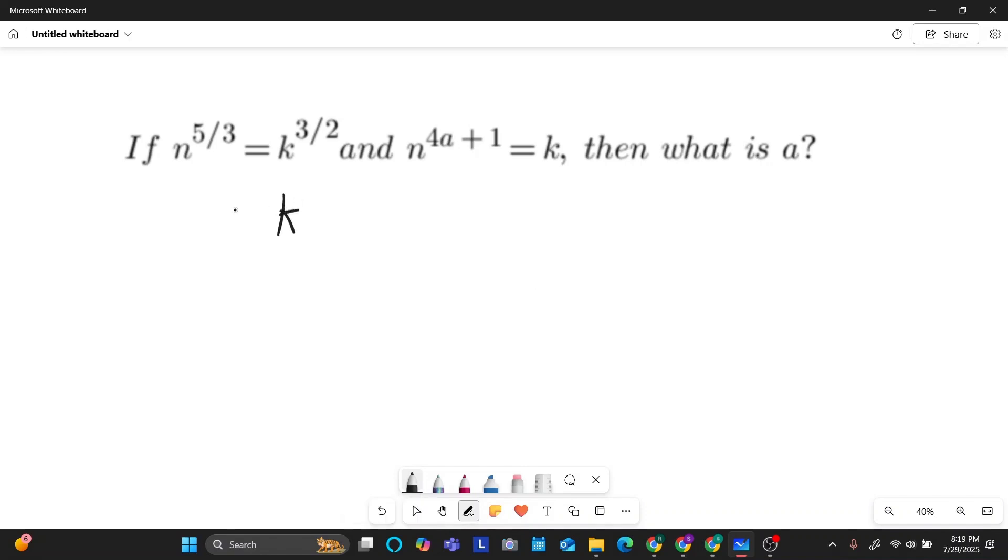So if I was to isolate for k right here, I'd get k equals n to the power of something. And so then I could take this n to the power of something, plug it into k right here, and then set that equal to n to the power of 4a plus one. And then at that point, since you'd be working with the common bases, you could set whatever's in the exponents equal to each other. So to illustrate that process, first I'd have to isolate for k right here. And in order to do that, I have to multiply both sides of the equation by the reciprocal of 3 over 2 because I want to isolate k. So if I was to do that, I'd get n to the power of 5 over 3 times 2 over 3, which is n to the power of 10 over 9, equals k to the power of 3 halves times 2 thirds, which is just k. And so n to the 10 over 9 equals k.